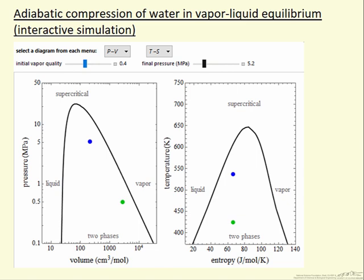What the simulation allows us to do is to pick two displays. In this case, we pick pressure versus volume, and notice this is log of pressure and log of volume. And we pick temperature versus entropy, and notice these are both linear scales.